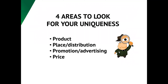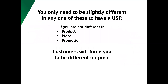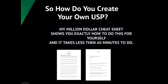There are four areas to look at for your uniqueness: it's either in your product; in your marketing terms, the place or your distribution — how you distribute your products; in the way you advertise or promote; or in your price. If you are not different in any one of the first three — product, place, or promotion — your customers will force you to be different on price and force you to discount. So start looking at your product, and if there's no obvious USP there, look at your distribution or how you promote your products.